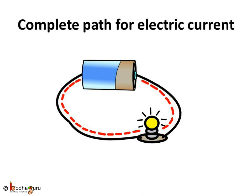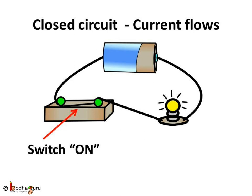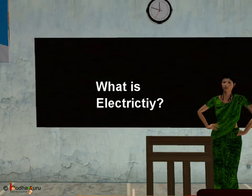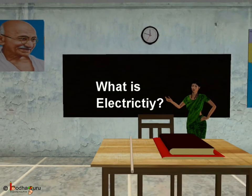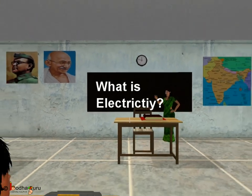When the switch is off, we say the circuit is open and the current cannot flow through it. When the switch is on, we say the circuit is closed and the current can flow through it. That's all for today. Bye Bye Kids!